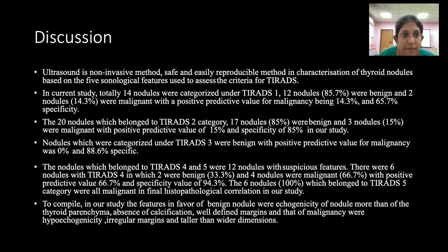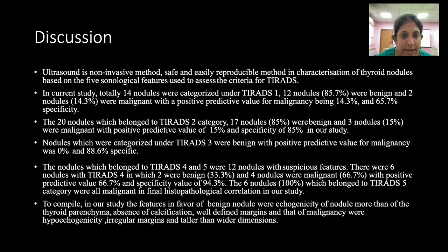Ultrasound is a non-invasive, safe, and easily reproducible method for characterizing thyroid nodules based on 5 sonological features for TIRADS criteria. In the current study, 14 nodules were categorized under TIRADS 1, of which 12 were benign and 2 malignant; positive predictive value for malignancy was 14.3% with 65.7% specificity. The 20 TIRADS 2 nodules had 17 benign and 3 malignant, PPV 15%. TIRADS 3 nodules were 100% benign, PPV 0%. TIRADS 4 had 6 nodules (2 benign, 4 malignant), PPV 66.7%. All 6 TIRADS 5 nodules were malignant on histopathology.